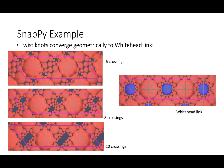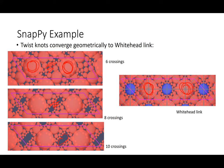I can show this in SnapPy. Here I've drawn twist knots and the Whitehead link. On the right is the Whitehead link, with the blue sphere being the new crossing-circle cusp. With six crossings you can already see the big horospheres. As you increase the crossings, the spheres in the middle get smaller and smaller, splitting off and forming an empty hole, until at high crossings it looks nearly identical to the Whitehead link.